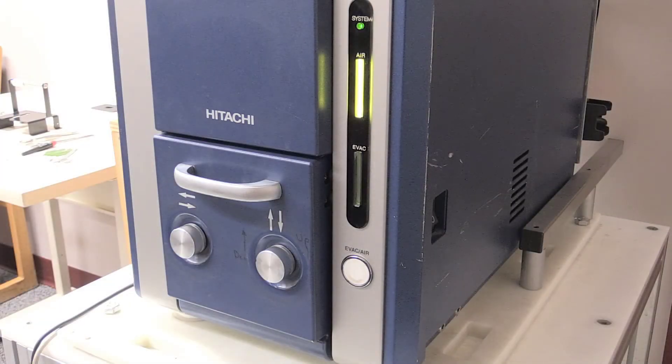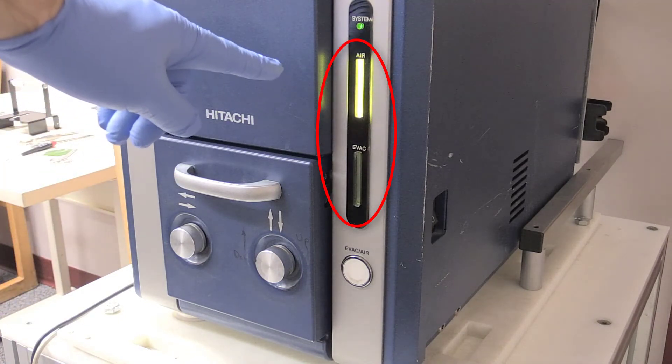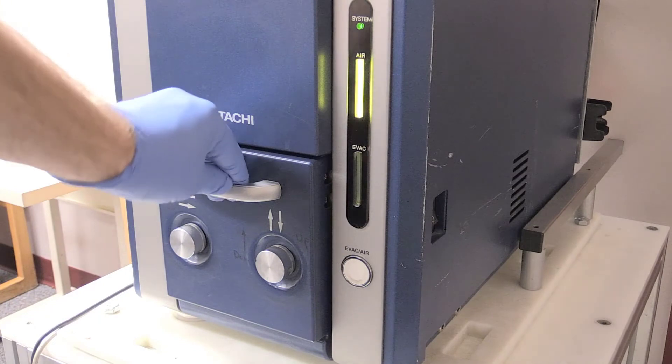If the EVAC LED on the front of the machine is solid yellow in color, pull gently on the specimen stage handle to open the unit.